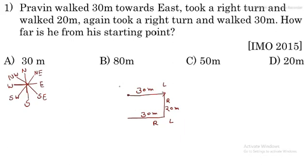His starting point is here. You can see a rectangle is forming here, because the property of a rectangle is that opposite sides are equal. This side is 30 meters, and the opposite side is also 30 meters. The breadth is 20 meters, so the opposite side is also 20 meters. This confirms a rectangle. So 20 meters is the right answer for this question.